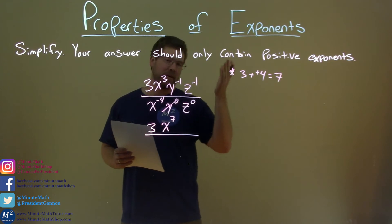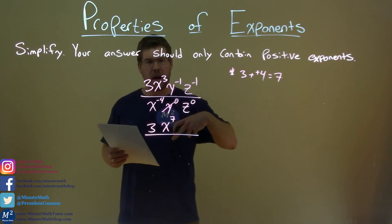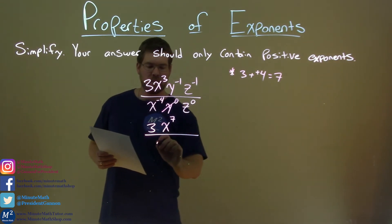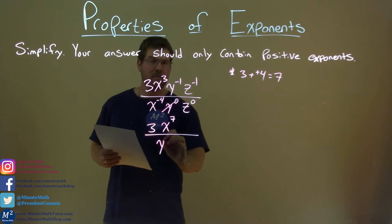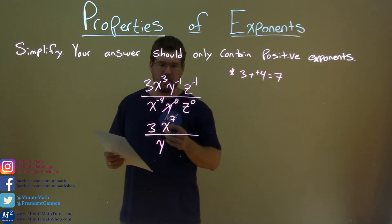We can't have a negative exponent. It needs to be positive. Bring it to the denominator. Make it a positive exponent. It's to a 1 power, y to the 1 power, but we leave it there without writing the 1.